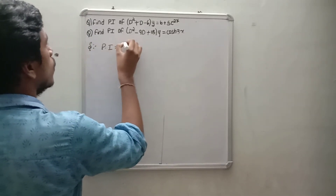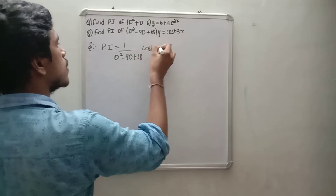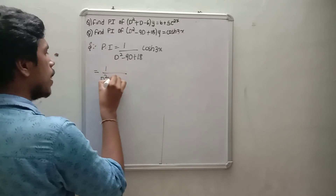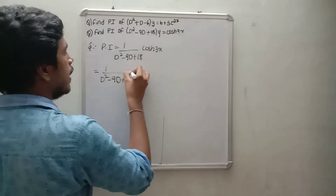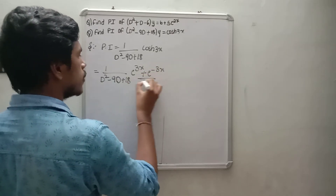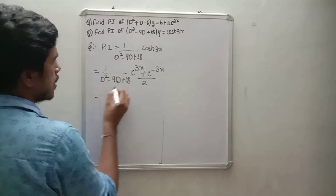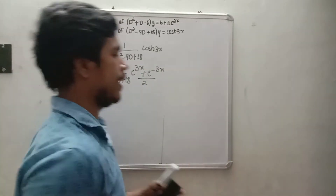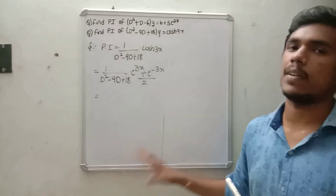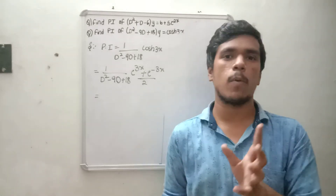The particular integral is equal to 1 by (D squared minus 9D plus 18) into cos h(3x). This is the given sum. So we expand: 1 by (D squared minus 9D plus 18) into (e to the power 3x plus e to the power minus 3x) divided by 2. There are two terms, so we split them.